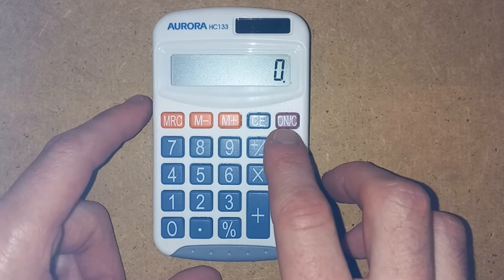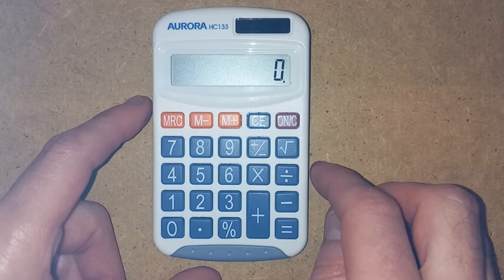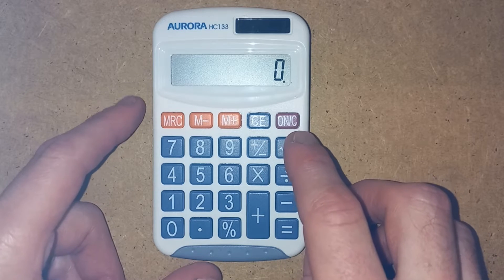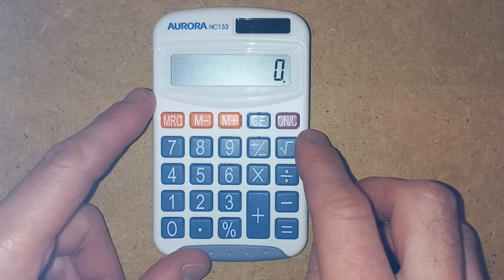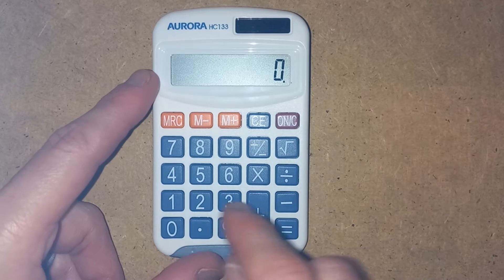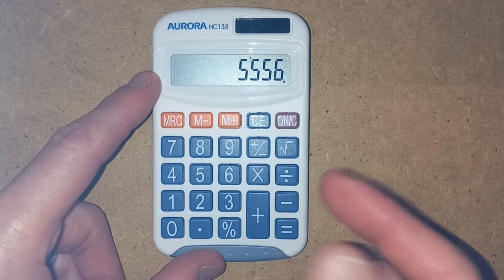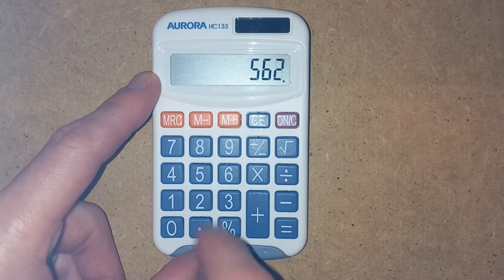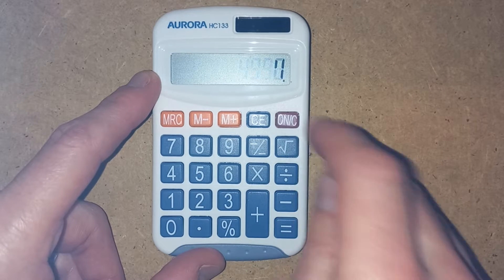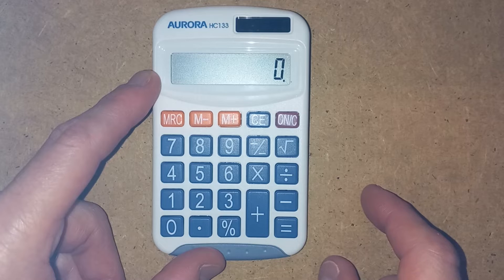So the ON bit, as I said, makes the screen light up. Now the C, the C bit actually means clear. So for example, if we've got, I don't know, we've just done a calculation, the C will clear it so we can start again.